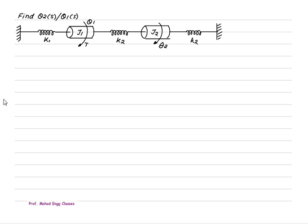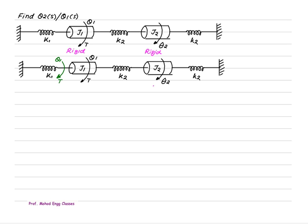Consider a second example where we want to find θ₂(s)/θ₁(s). Here J₁ is a moment of inertia connected between K₁ and K₂. K₁ has one end fixed and the other connected to J₁, so one displacement is zero and the other is θ₁. J₁ has only one displacement θ₁. K₂ has two displacements: θ₁ and θ₂. J₂ has one displacement θ₂. K₃ has two displacements: θ₂ and ground. Since J₁ and J₂ are rigid bodies, we write θ₁ on both sides of J₁ and θ₂ on both sides of J₂, canceling the middle terms.